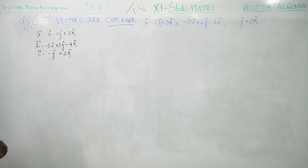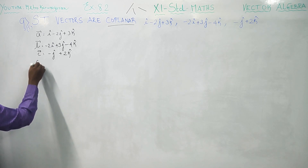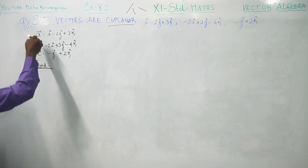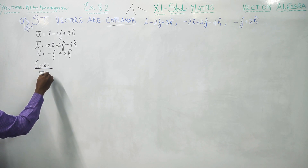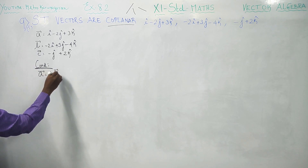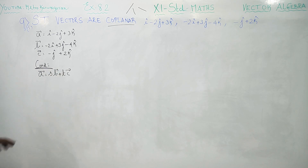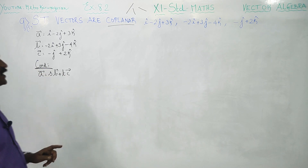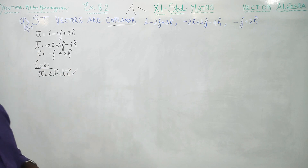What is the condition we are going to use to show the three vectors are coplanar? This is the important condition: if three vectors a, b, c are coplanar, then one vector can be expressed as a linear combination of the other two vectors. If a vector equals s times b vector plus t times c vector, and you satisfy this condition, then the three vectors are coplanar vectors.